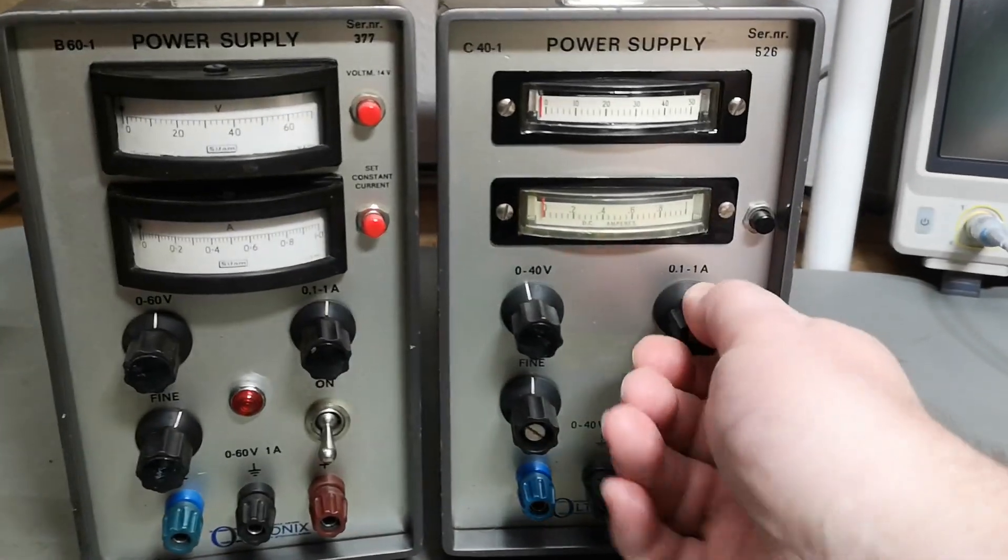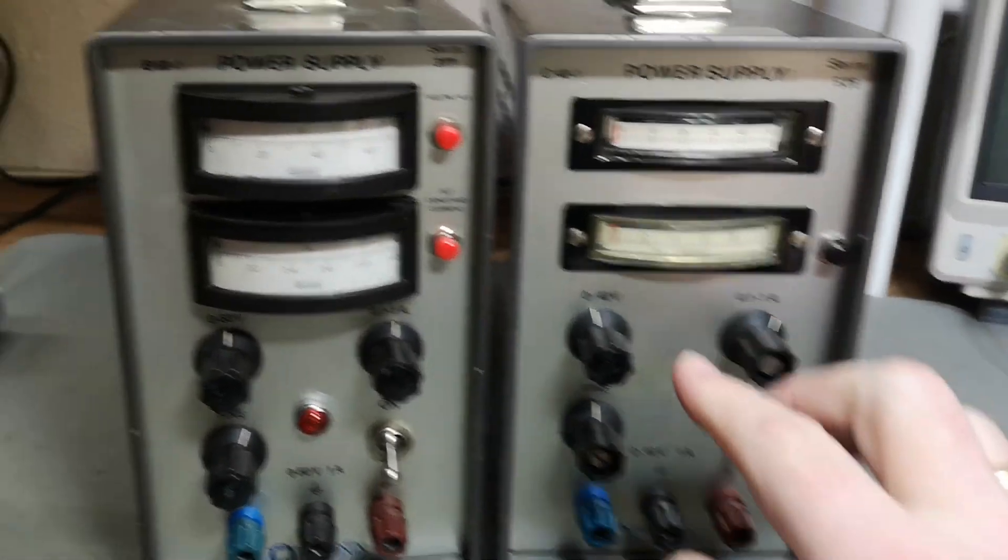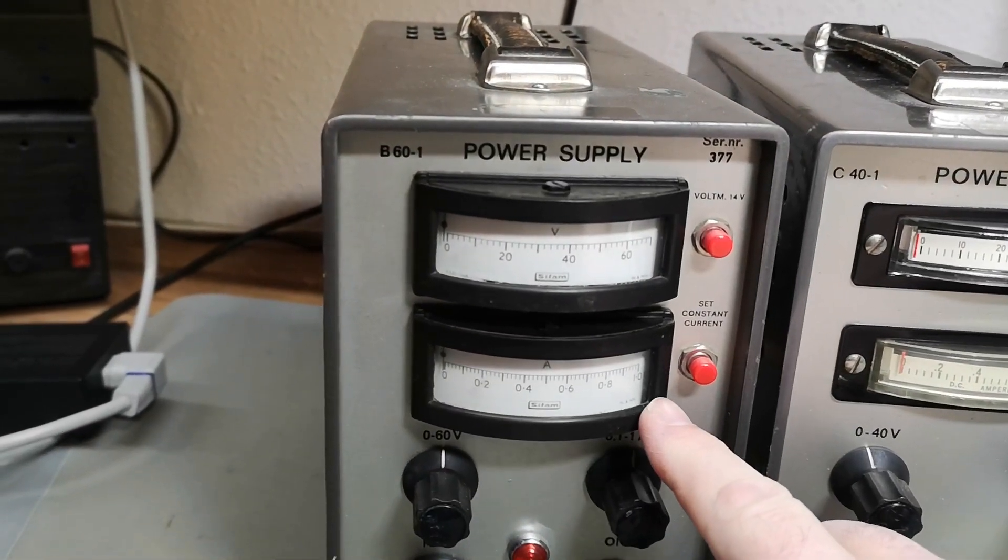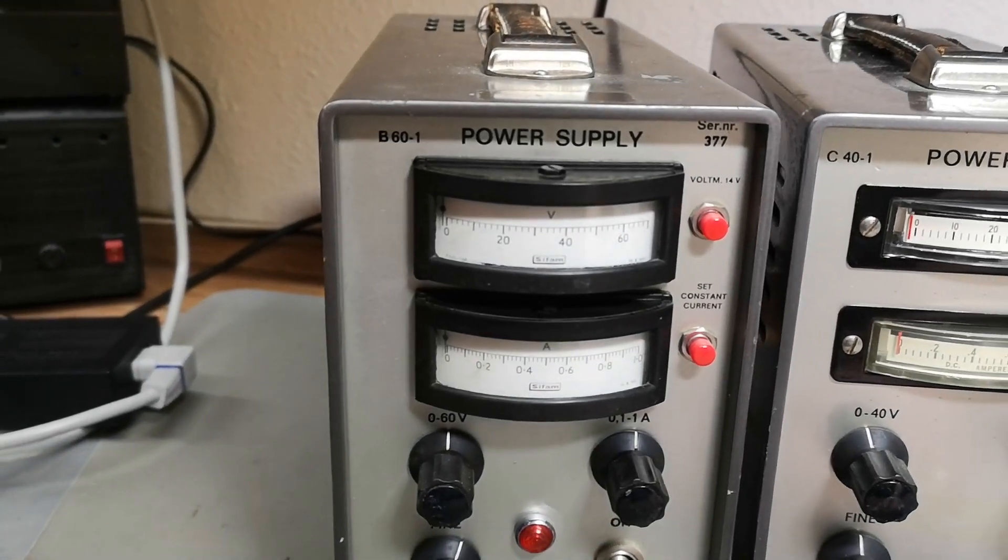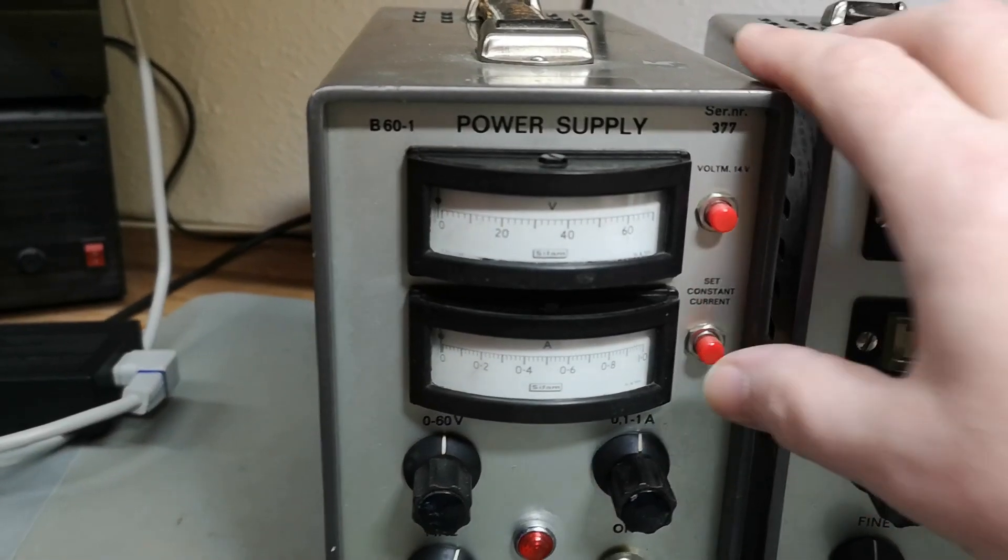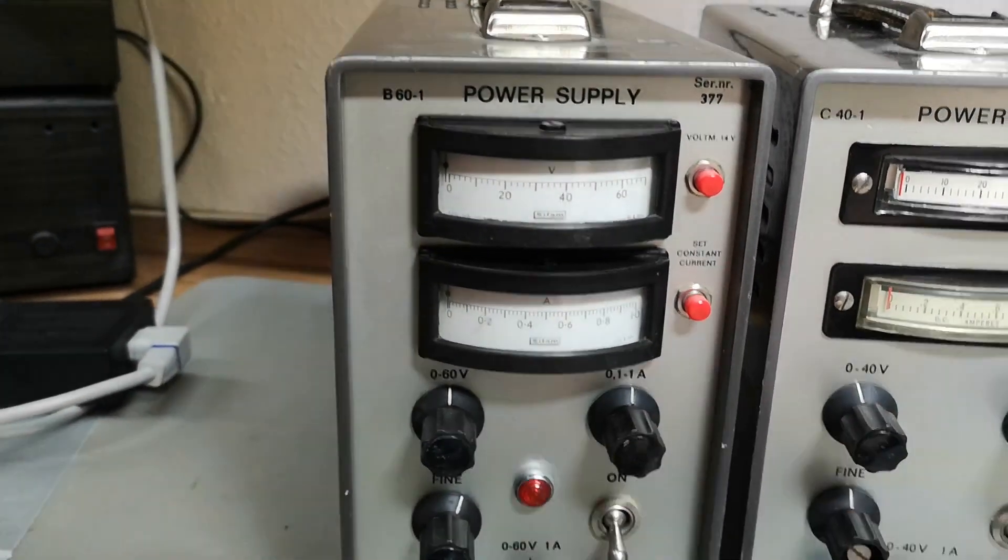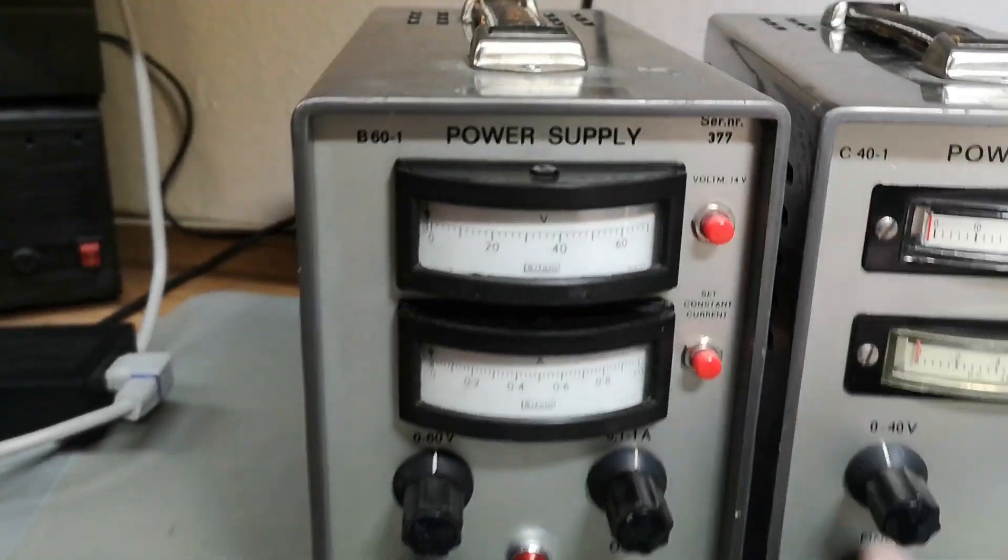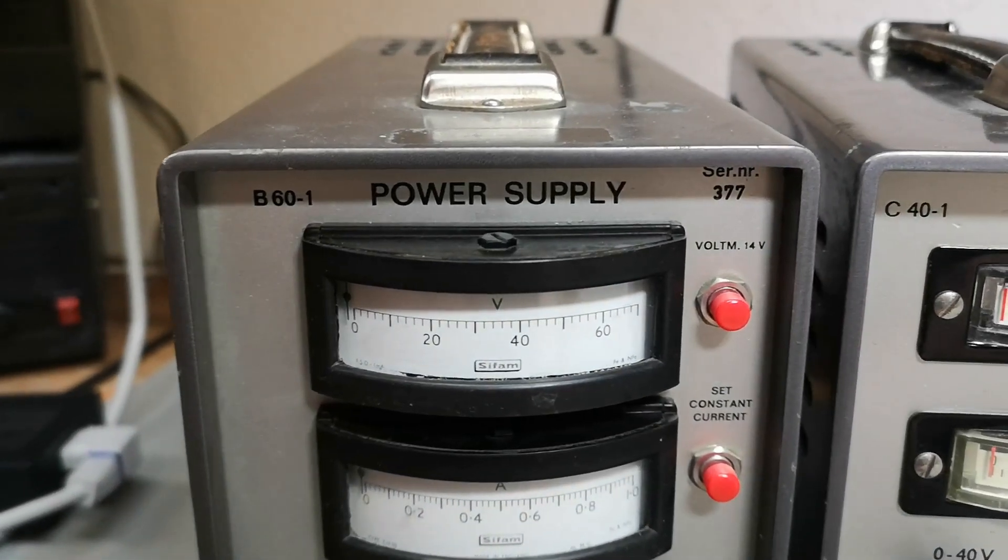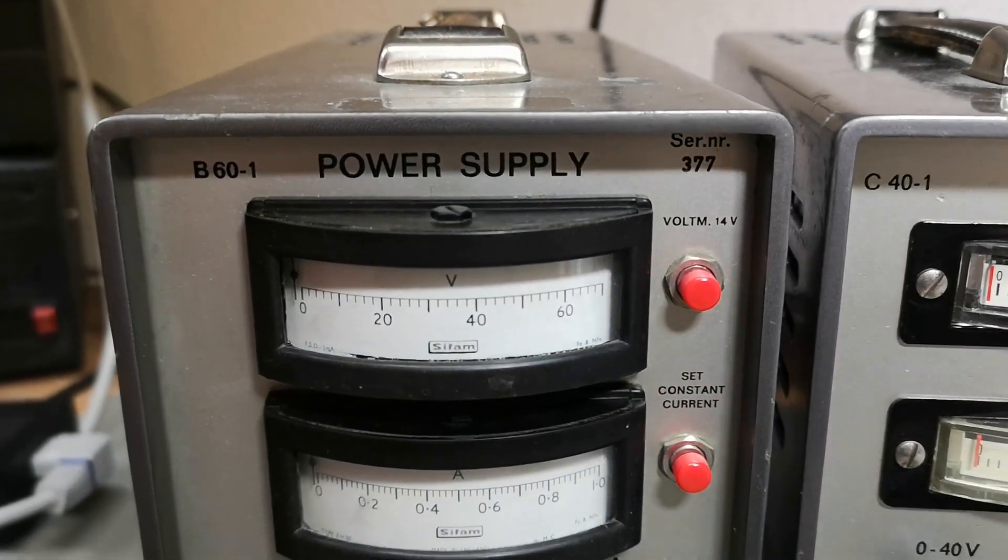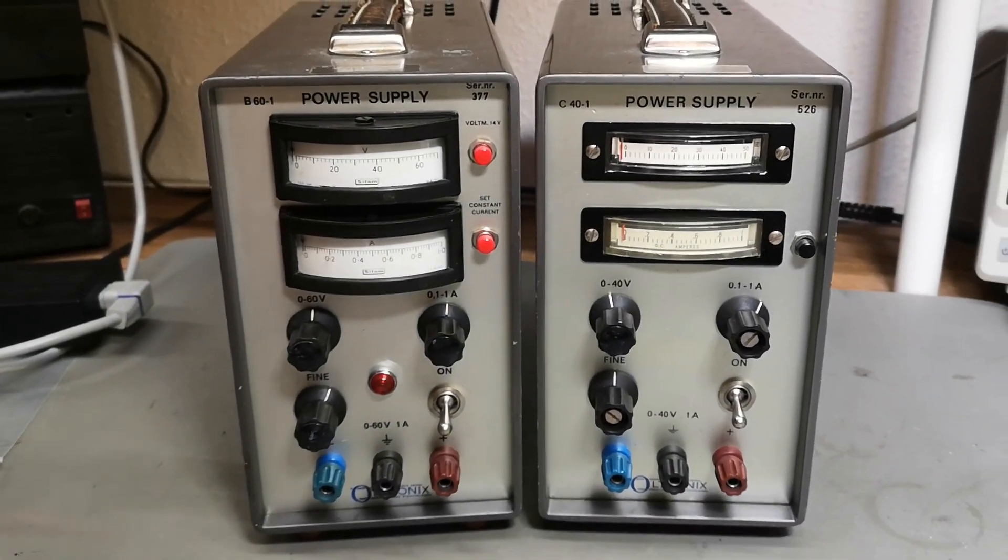So you can read the current setting. On the B60 it says set constant current, so I think definitely a short of the output, and then you can set the current. So that is a good idea. But look at that one volt meter showing 14 volts. I don't know how old they are yet, but I'm definitely going to look for identifications inside.